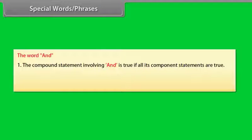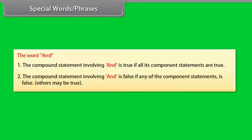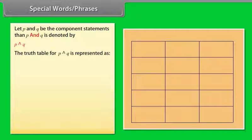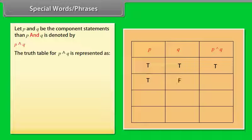Special words and phrases. The word AND: 1. The compound statement involving AND is true if all its component statements are true. 2. The compound statement involving AND is false if any of the component statements is false; others may be true. Let P and Q be the component statements. The truth table for P AND Q: P true and Q true → P AND Q is true; P true and Q false → P AND Q is false; P false and Q true → P AND Q is false.